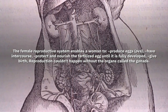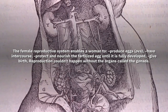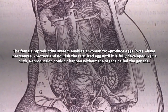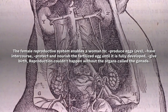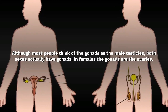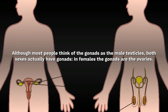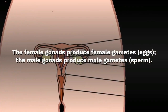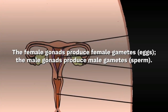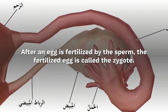The female reproductive system enables a woman to produce eggs, have intercourse, protect and nourish the fertilized egg until it is fully developed, and give birth. Reproduction couldn't happen without the organs called the gonads. In females, the gonads are the ovaries, which produce female gametes — eggs. The male gonads produce male gametes — sperm.